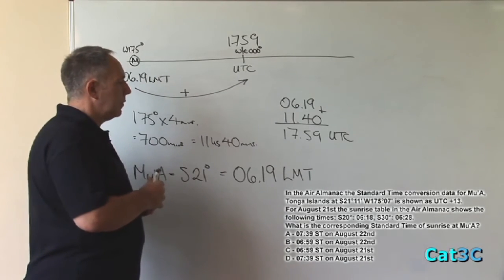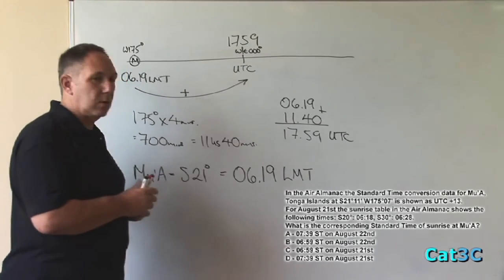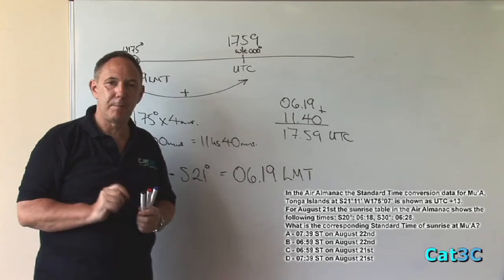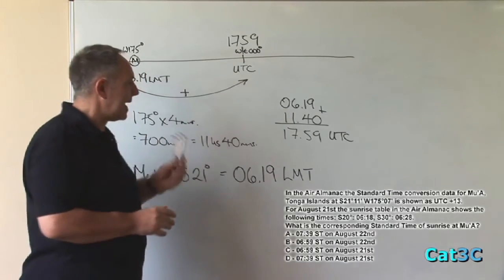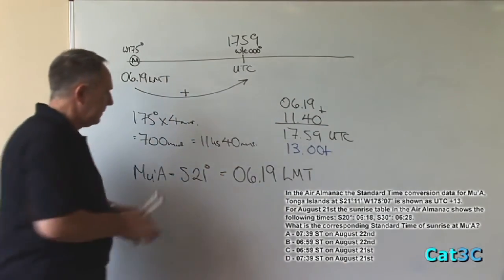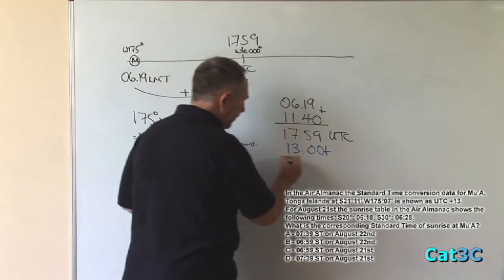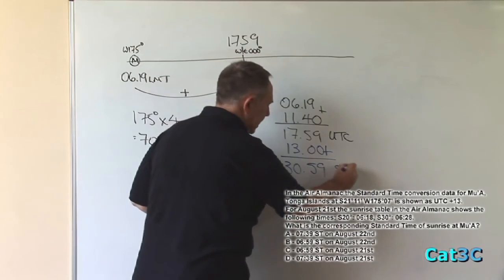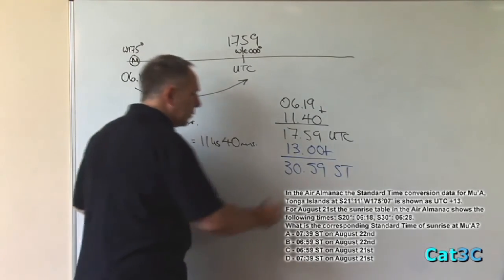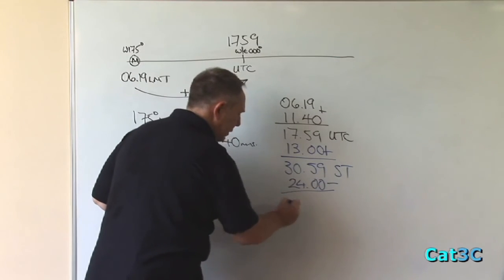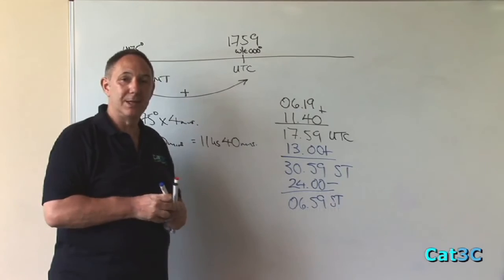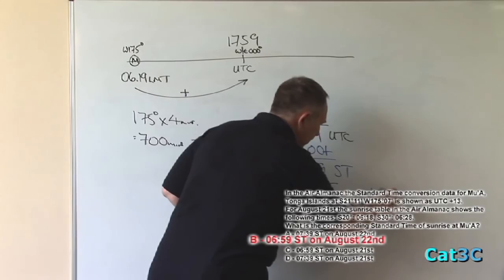The next thing we have to do is to convert the UTC time into standard time. Now, conversely, with this question, where you might think that you go back in the same direction, we are actually told that the UTC conversion is plus 13 hours. So all we do, very simply, is add on 13 hours. Giving me a final answer of 3059 standard time. However, we can't have 30 hours and 59 minutes because there are only 24 hours in the day. So what I have to do is to take 24 hours off that to leave me with 0659 standard time. But if I take 24 hours off the time, then I have to add one day onto the date. So the final date will be the 22nd of August.